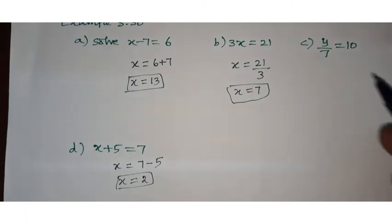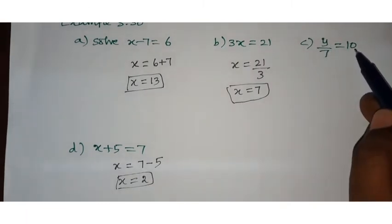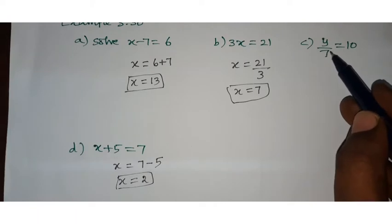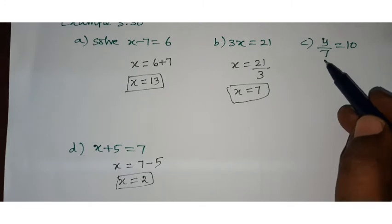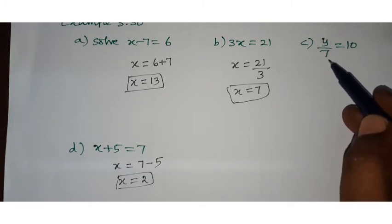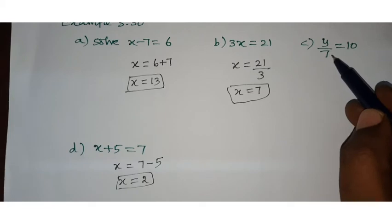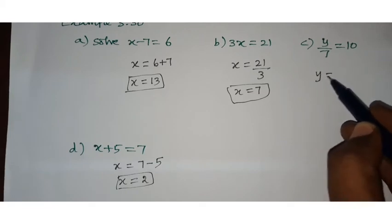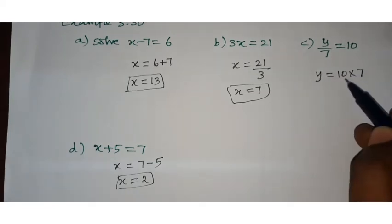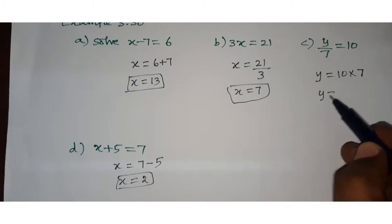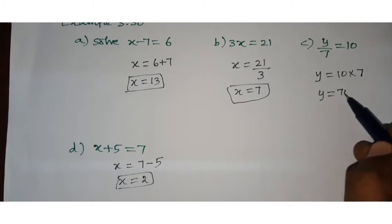Fourth example: y divided by 7 equals 10. The coefficient of y is 1 by 7, so 7 is in division. When we bring that 7 to the other side, it becomes multiplication. Therefore y equals 10 into 7, so y equals 70.